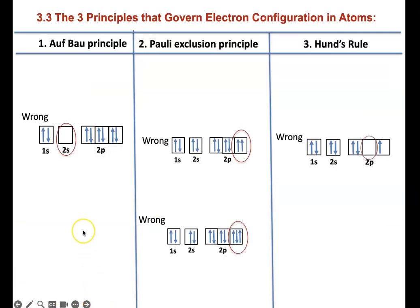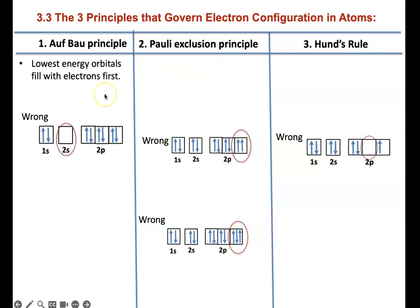Let's look at these three principles. I gave you a printout — you need to paste it in your notes. The first is the Aufbau principle, which you already know, then the Pauli exclusion principle, and Hund's rule. The Aufbau principle states that the lowest energy orbitals must fill with electrons first.